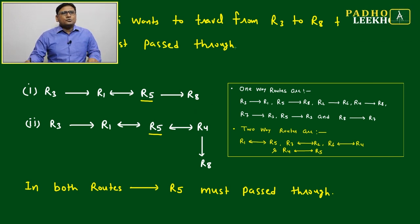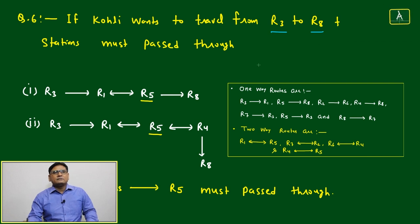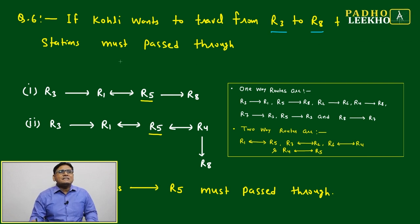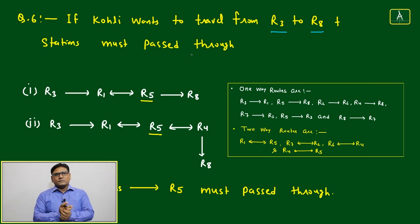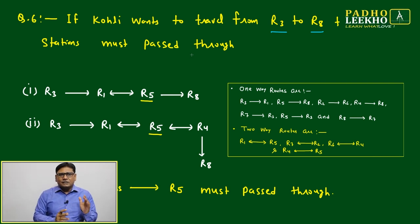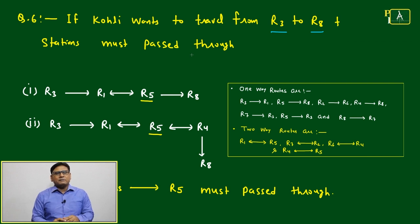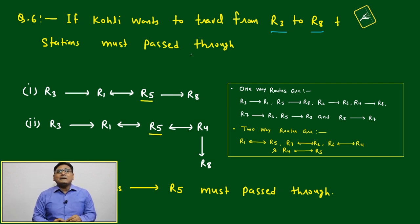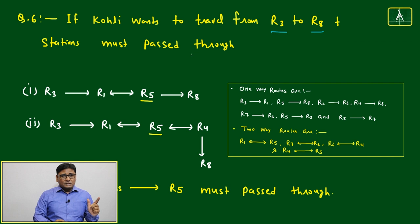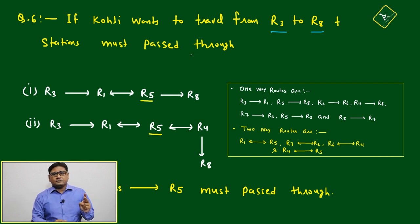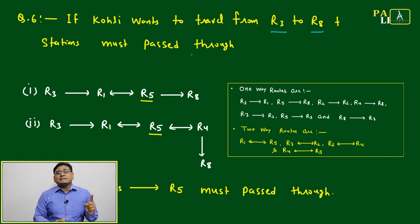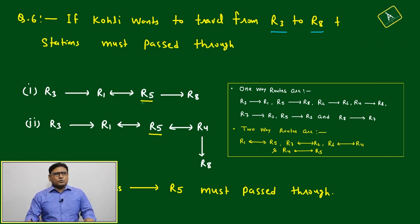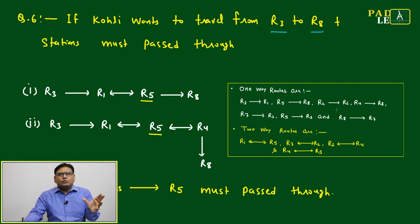Question number six: if Coli wants to travel from R3 to R8, which stations must be passed through? The condition here is to find which station or stations are mandatory — sometimes it may be one city, sometimes two cities that must be crossed.